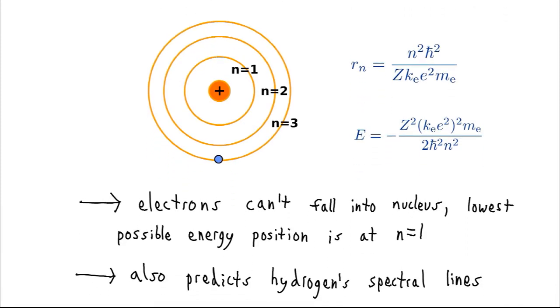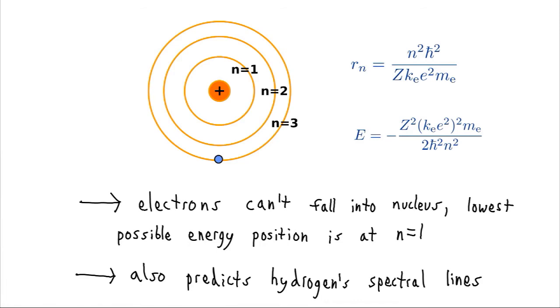Now Bohr's model is also a magnificent success because it predicts hydrogen spectral lines, the different wavelengths at which hydrogen absorbs and emits. We should formally introduce this idea because it's very important.